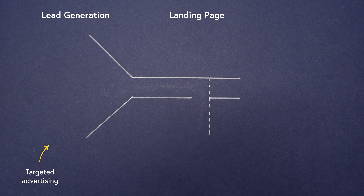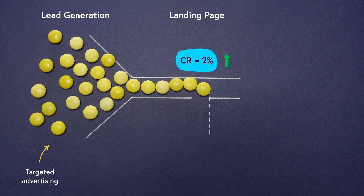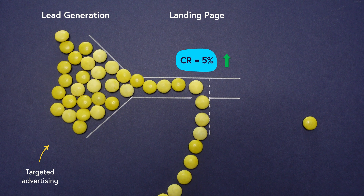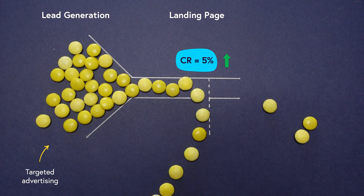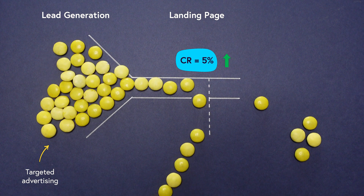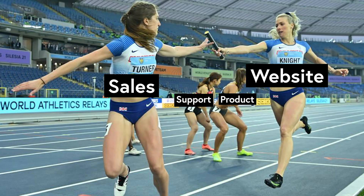If we only ever look at one stage of the funnel, we can miss out on bigger, more important changes that need to happen across the entire customer journey. Funnel vision is particularly common with teams who treat the customer journey like a relay race — everybody's only thinking about their section. Instead, it's better to team up and think about that customer journey as a whole, because that's where we can uncover the insights that make the biggest impact.